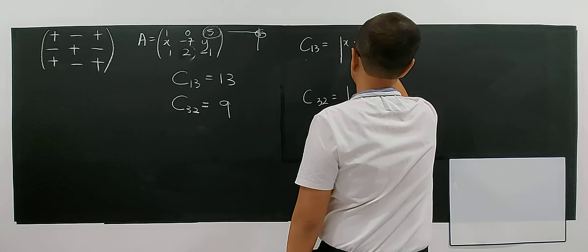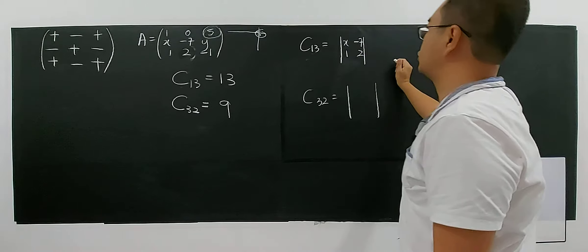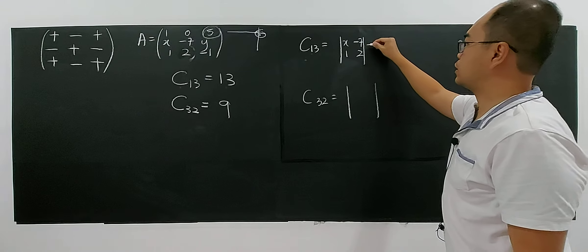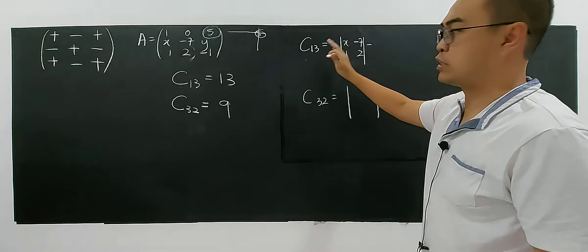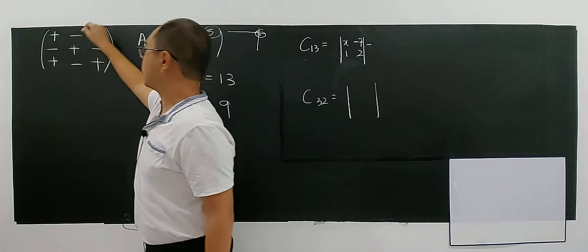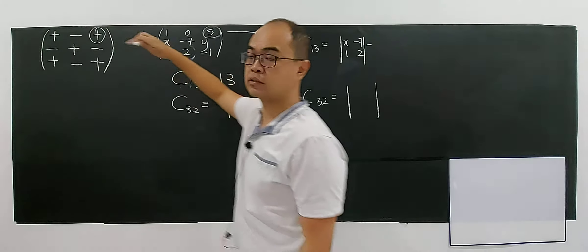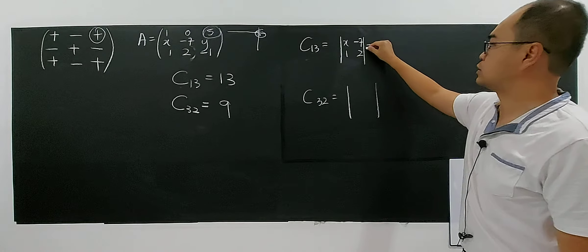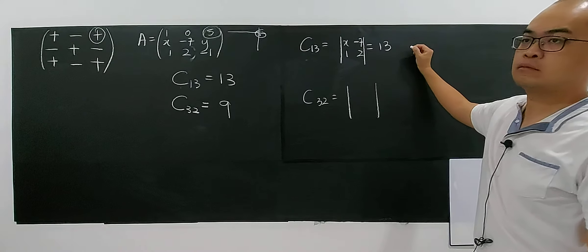x, negative 7, 1 and 2. But you have to check first. This one is positive or negative because 1, 3, right? 1, 3 is positive. For this location, it's positive. So, this is positive. So, it's equals to 13.